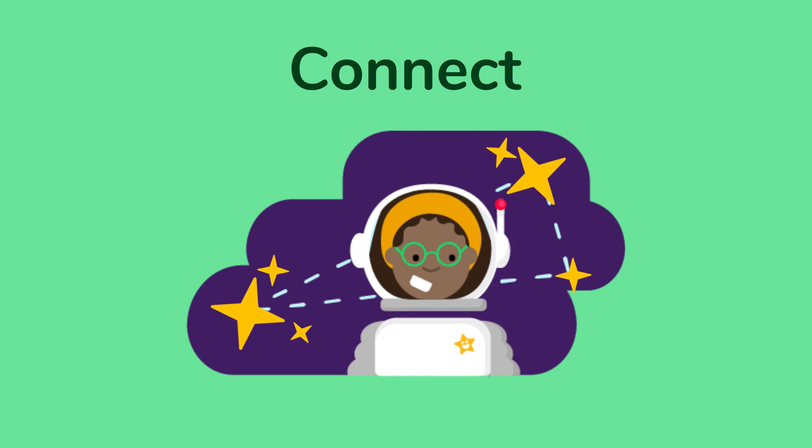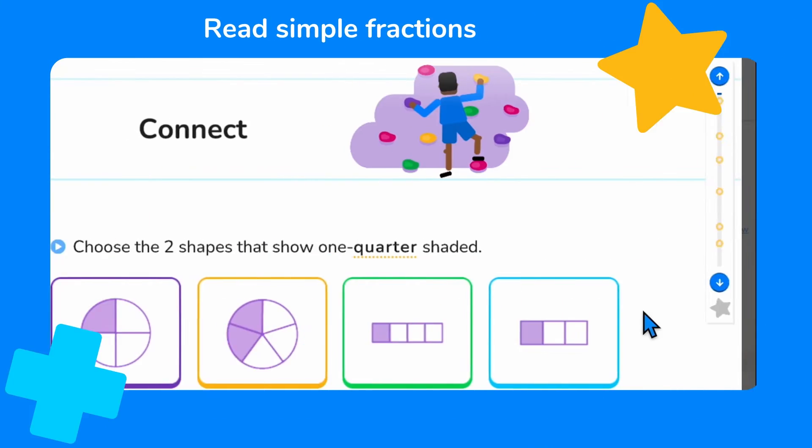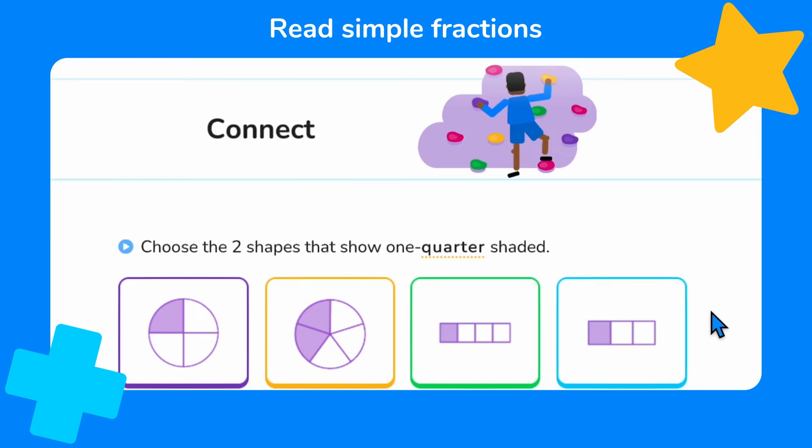First, let's connect what we already know, which will help us with the rest of this lesson. We're going to do that by choosing the two shapes that show one quarter shaded.